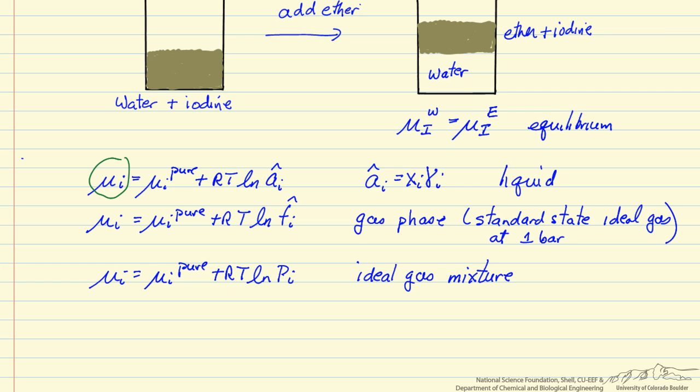This is the chemical potential of component i in the mixture. This is the single component chemical potential for that component, and then the activity. This is for liquid phase, and we typically end up using activity.